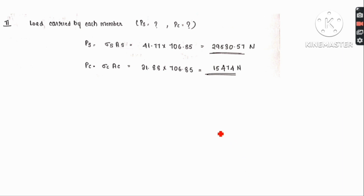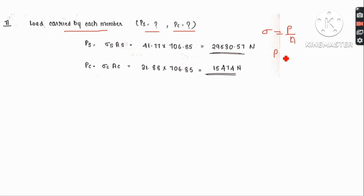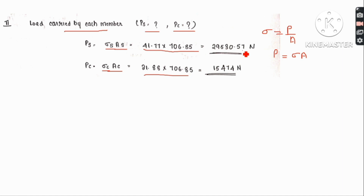Next, we find the load carried by each member. Load carried by steel rod is P_s, and load carried by copper tube is P_c. Using sigma equals P divided by A, so load equals sigma times area: P_s equals sigma_s times A_s, and P_c equals sigma_c times A_c. Substituting the values of sigma_s, sigma_c, A_s, and A_c gives us the individual load values P_s and P_c.